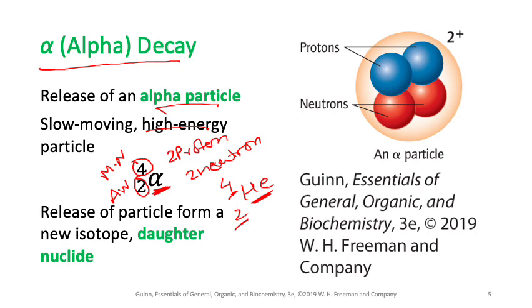Whenever a radioisotope releases a particle — in this case an alpha particle — the new element produced is called the daughter nuclide. Remember this term, as we will use it going forward.